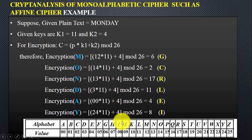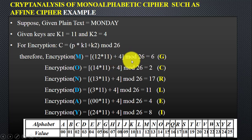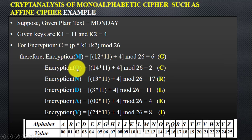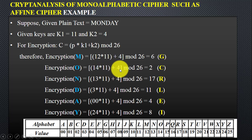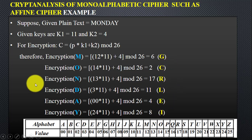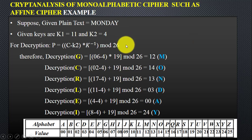For 'm,' the plaintext value is 12. Substituting into the formula with k1 and k2 and computing mod 26 gives 6, which corresponds to 'g.' For 'o,' the plaintext value is 14. Applying the same formula gives 2, which corresponds to 'c.' You apply this process for all plaintext characters.